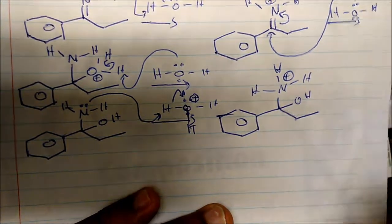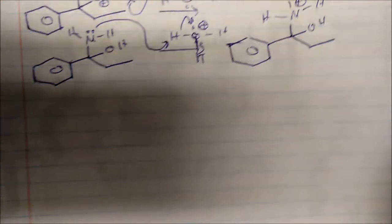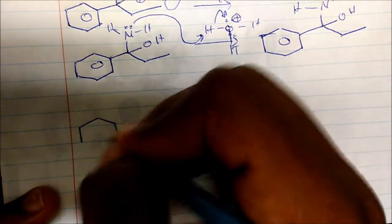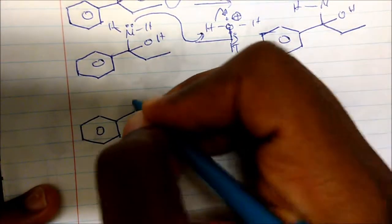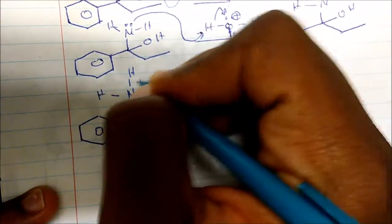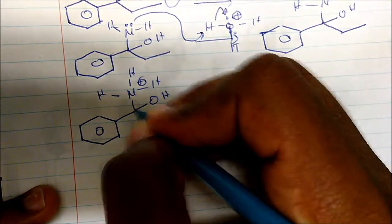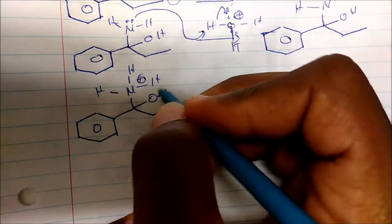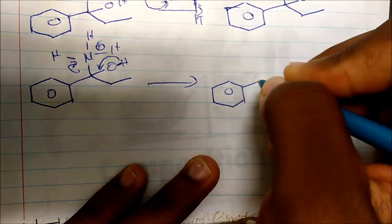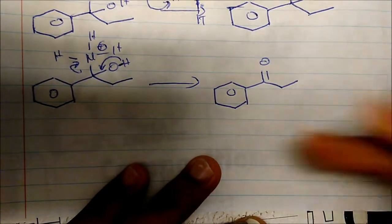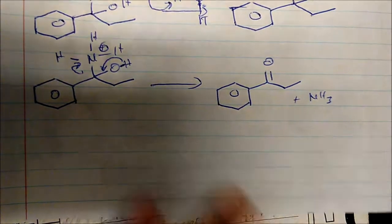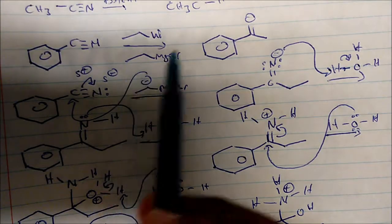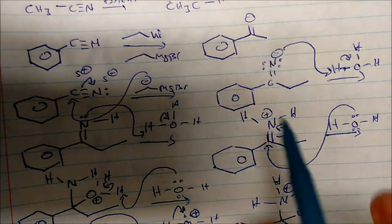Let me redraw the structure: nitrogen now has four bonds (automatic plus charge), we have an alcohol, and the R group. The last step of the mechanism — NH3 is now a very good leaving group. The single bond electrons form a double bond and expel NH3. So we get our ketone plus NH3. That is how, using organolithium or Grignard chemistry, we form ketones from nitriles.